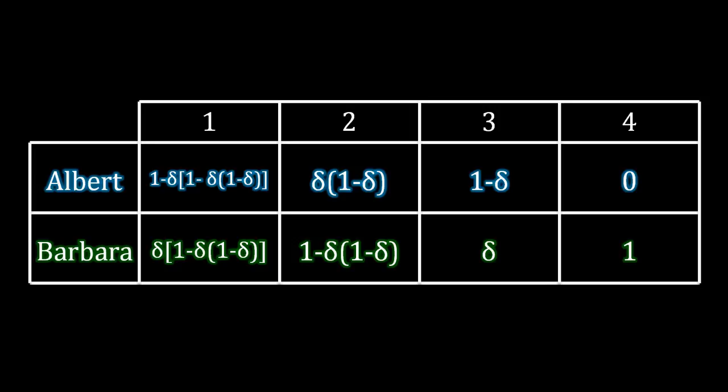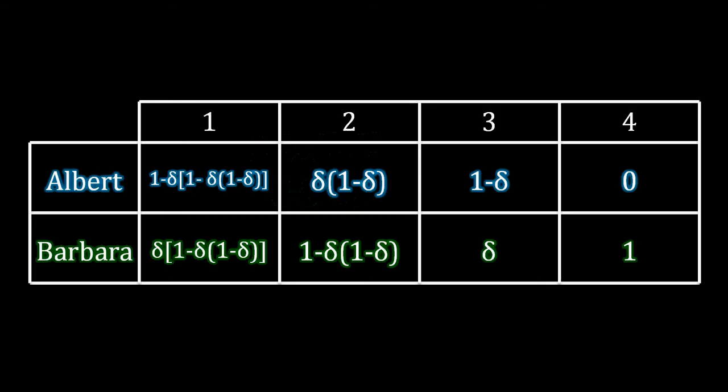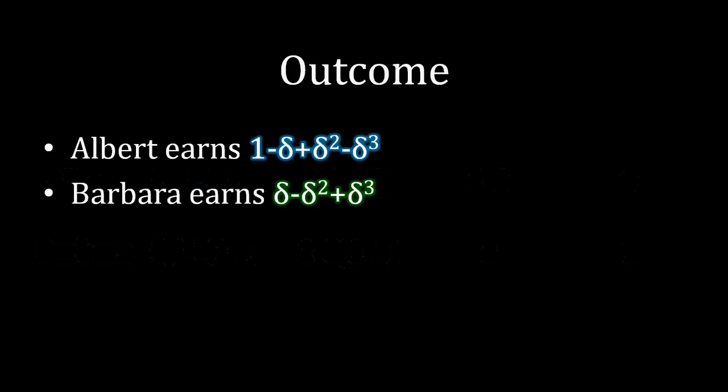This actually solves the game for us. We know what happens when there's four stages of bargaining. The outcome is that Albert receives one minus delta plus delta squared minus delta cubed. That's just me working out the multiplication from the box in column one. If you work out the multiplication, you get what's on this next slide. Barbara receives delta minus delta squared plus delta cubed. Like always, the offer that's made in the first period gets accepted. But the consequences of what will happen in stages two, three, four, and so forth affect the type of offer that's actually made and accepted in the first period.